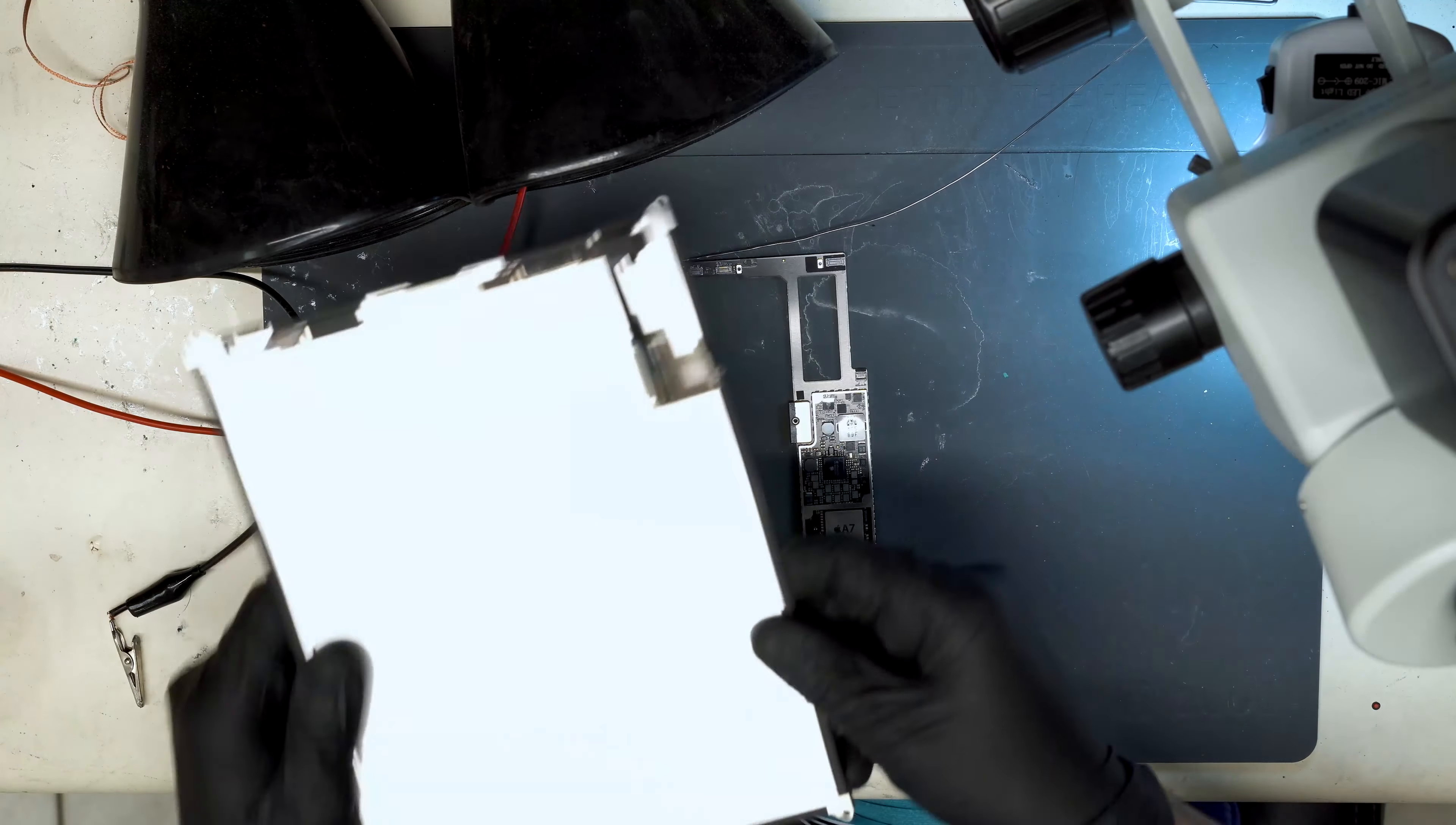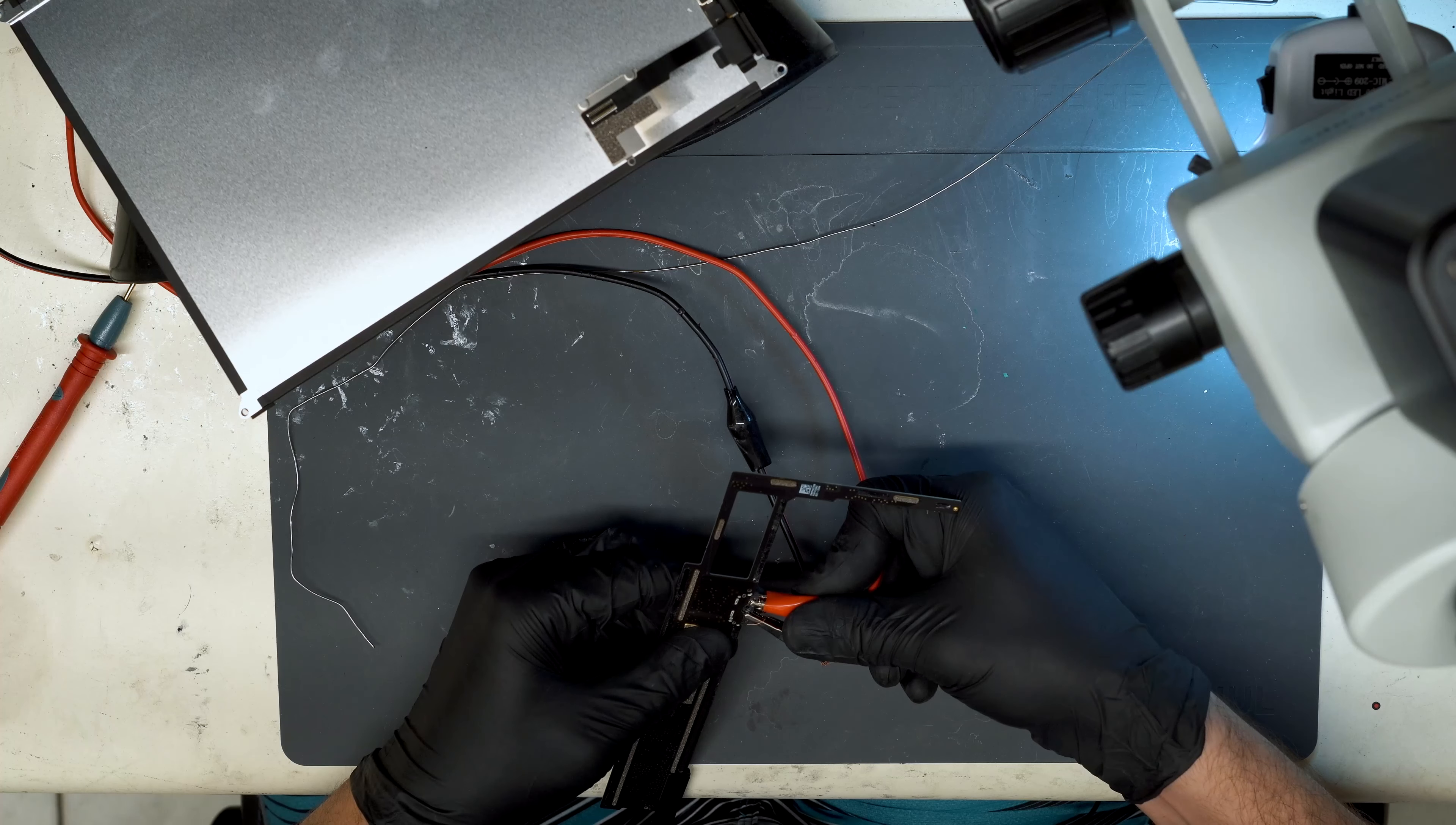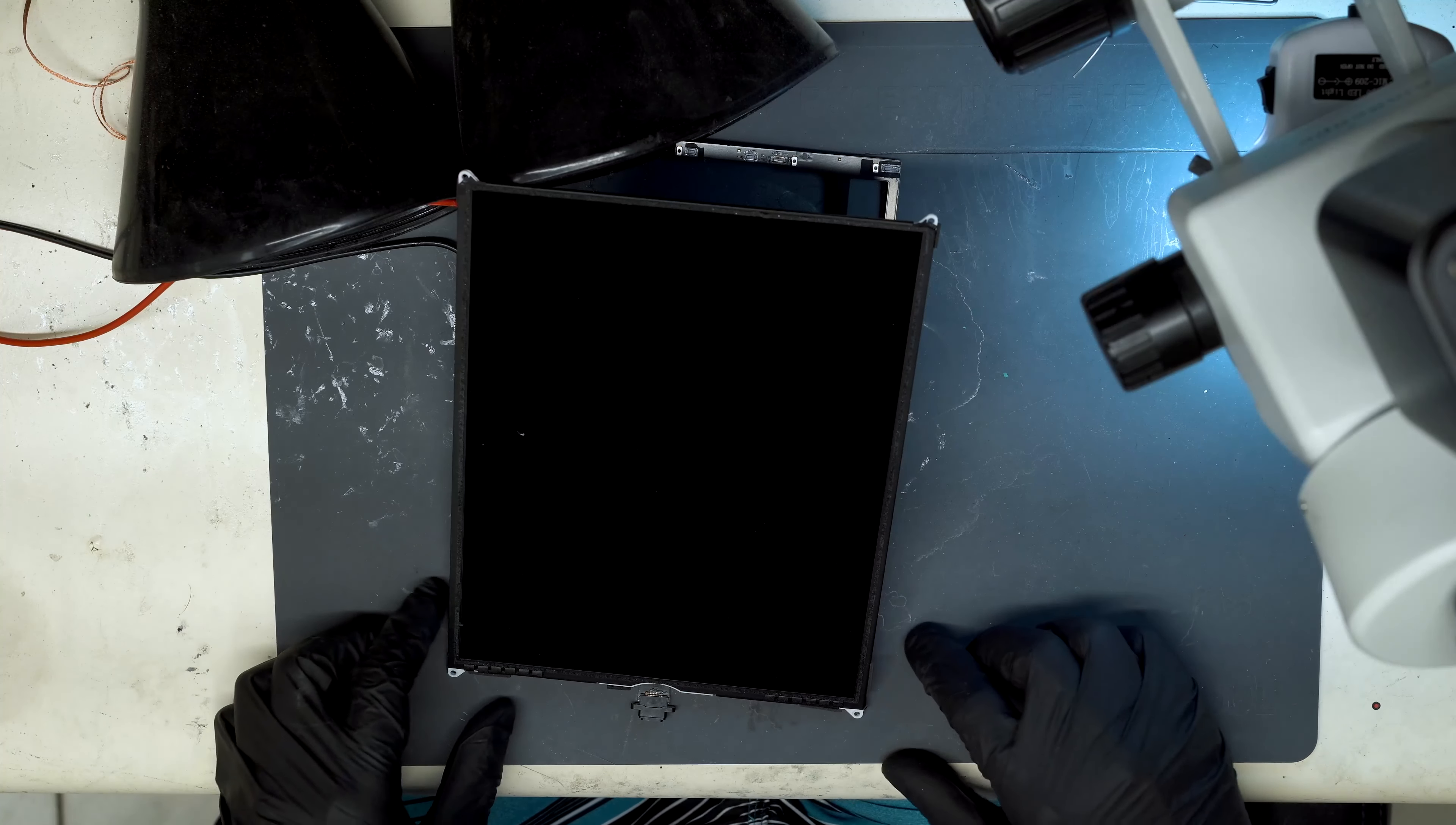Alright, so we have the board with a known good LCD. We're going to connect our DC power supply, connecting ground and this one here on the battery line. Make sure that the red connector is not touching ground. Now we can connect our screen. I'm going to enable our DC power supply. It's drawing zero.